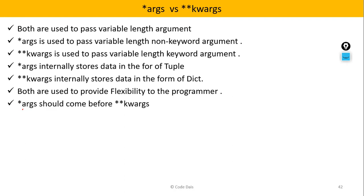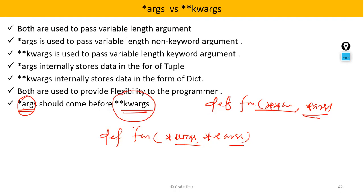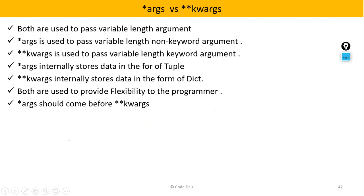You have to write *args before **kwargs. That means if you create a function DEF phone, you can write *args comma **kwargs. You cannot write DEF phone(**kwargs, *args) — that is not allowed. So *args should always come before **kwargs in the function definition.